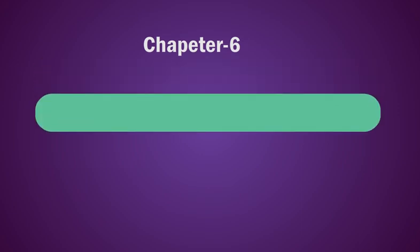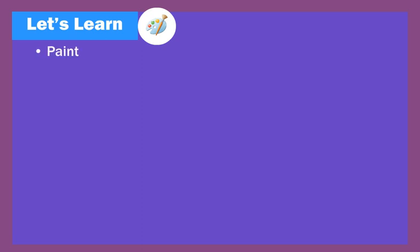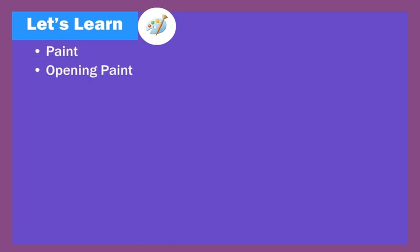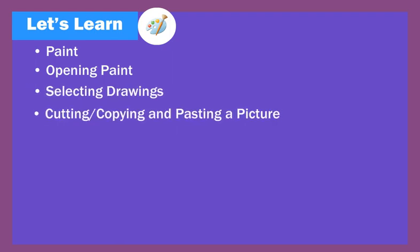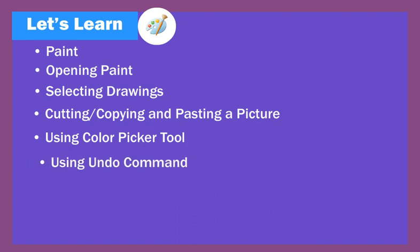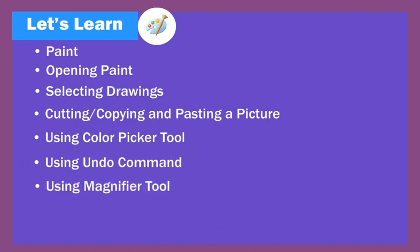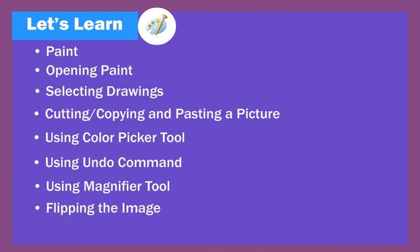Chapter 6: More in Paint. Let's learn Paint. Topics covered: Opening Paint, Selecting Drawings, Cutting, Copying and Pasting a Picture, Using Color Picker Tool, Using Undo Command, Using Magnifier Tool, Flipping the Image, and Resizing the Image.